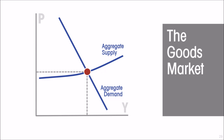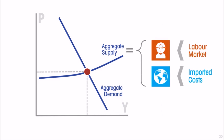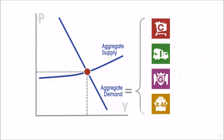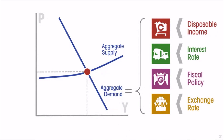To understand fluctuations in the short run, we combine this aggregate supply curve with a downward-sloping aggregate demand curve — the demand for all goods and services — giving us a model of the goods market. The aggregate supply curve shifts upward or downward based on what happens in the labor market and to imported costs such as the price of oil. The aggregate demand curve shifts left or right depending on consumers' disposable income, interest rates, fiscal policy, and the exchange rate.